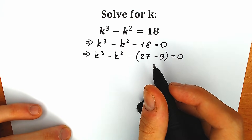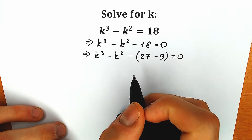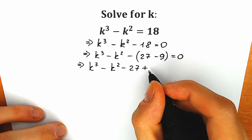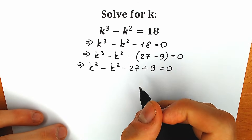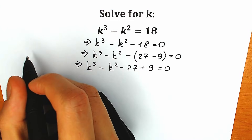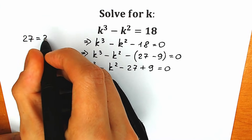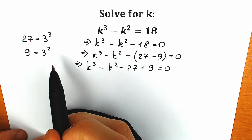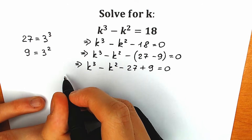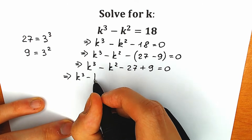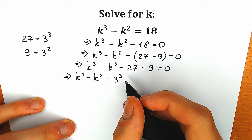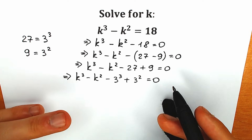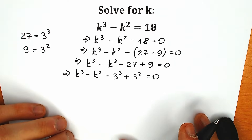A lot of students may be asking why 27 minus 9? Why not like 20 minus 2? Just wait a few seconds. The next thing: let's open parentheses. So we have k cubed minus k squared minus 27 plus 9. Because 27 can be written as 3 cubed, and 9 can also be written in terms of base 3 as 3 squared. These are great expressions because right here we have third power and right here second, so we can group something.